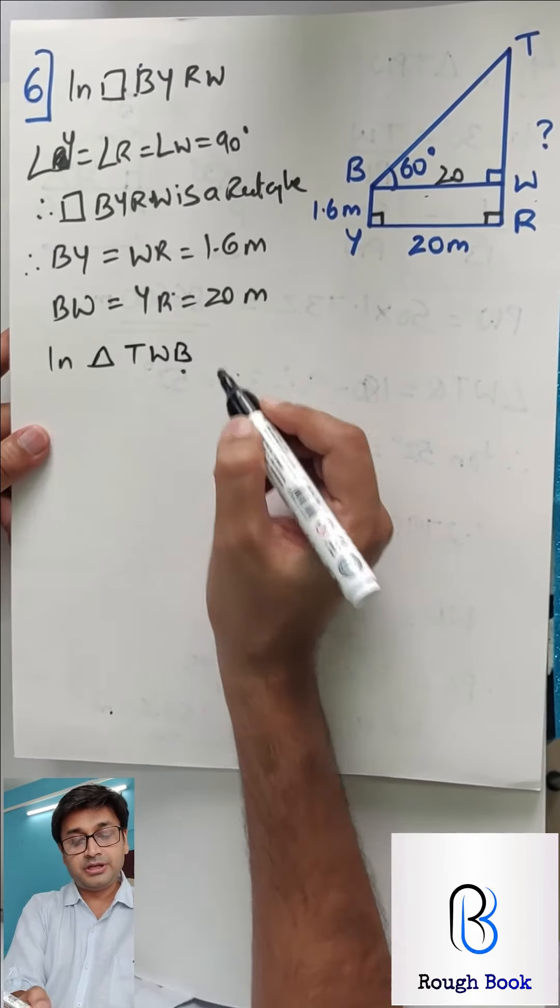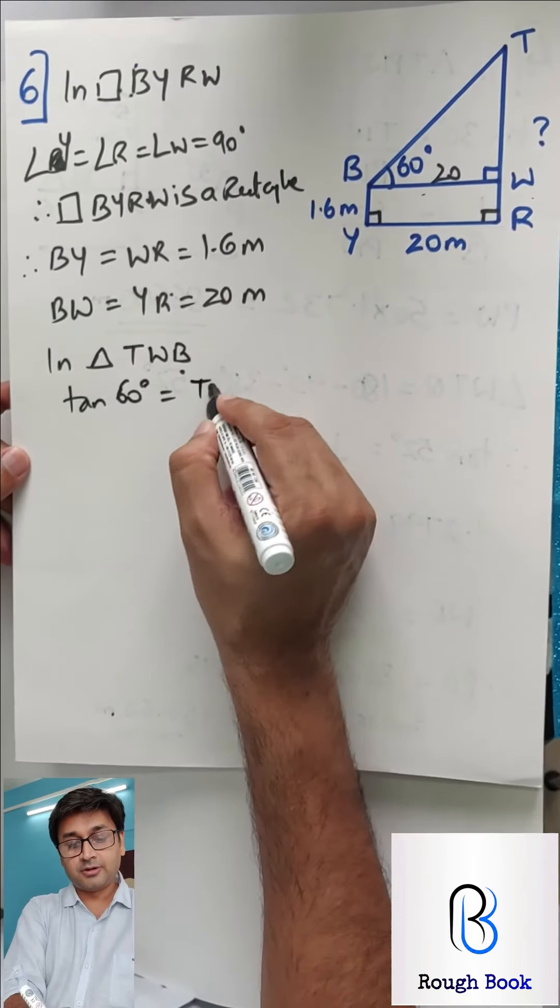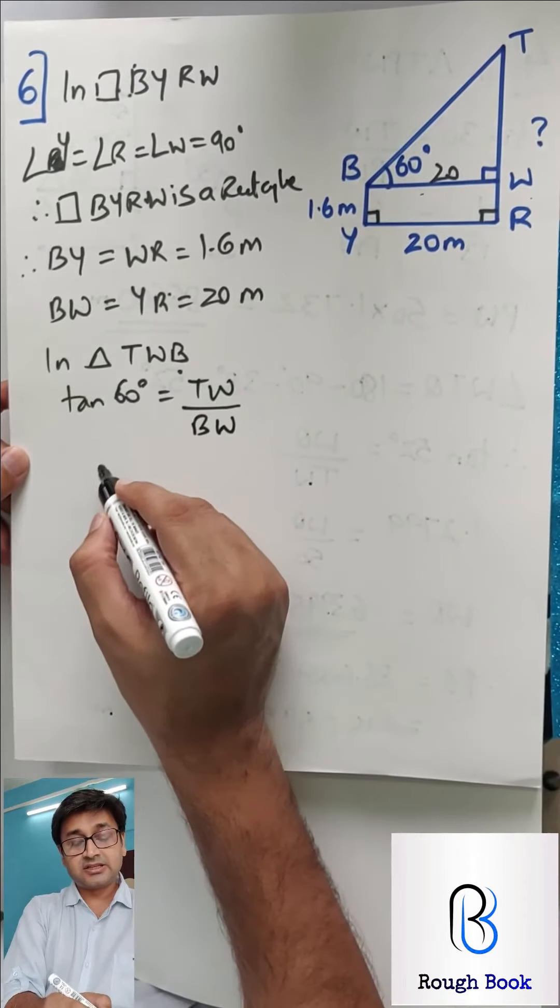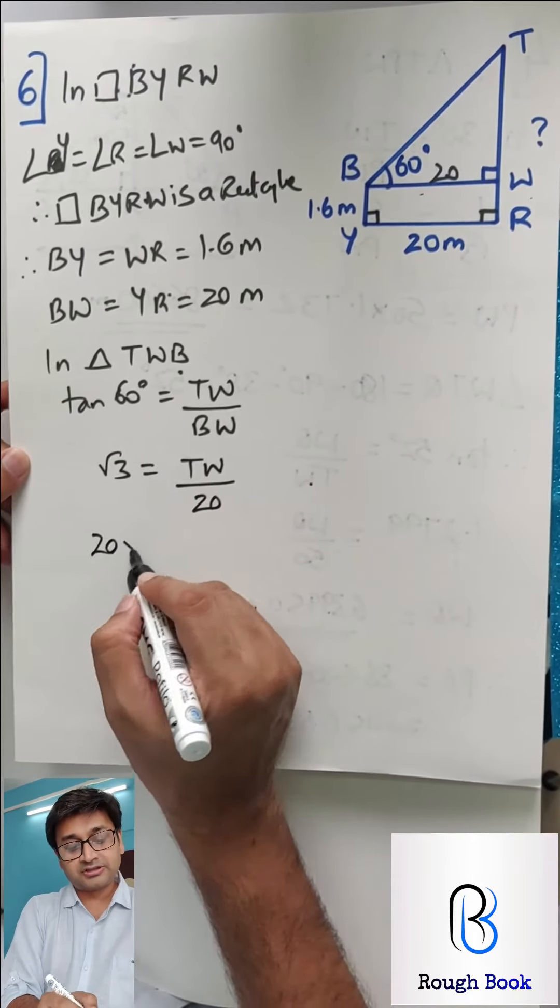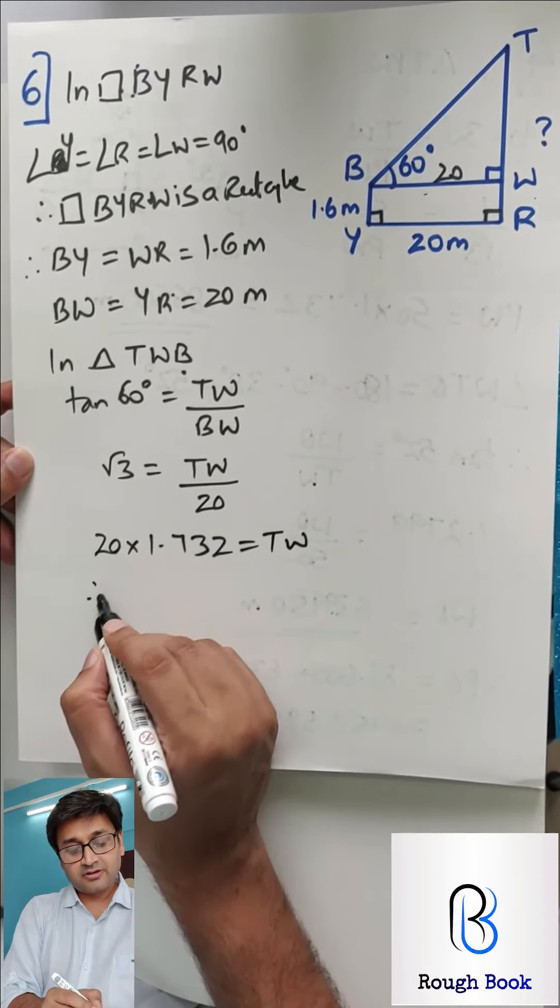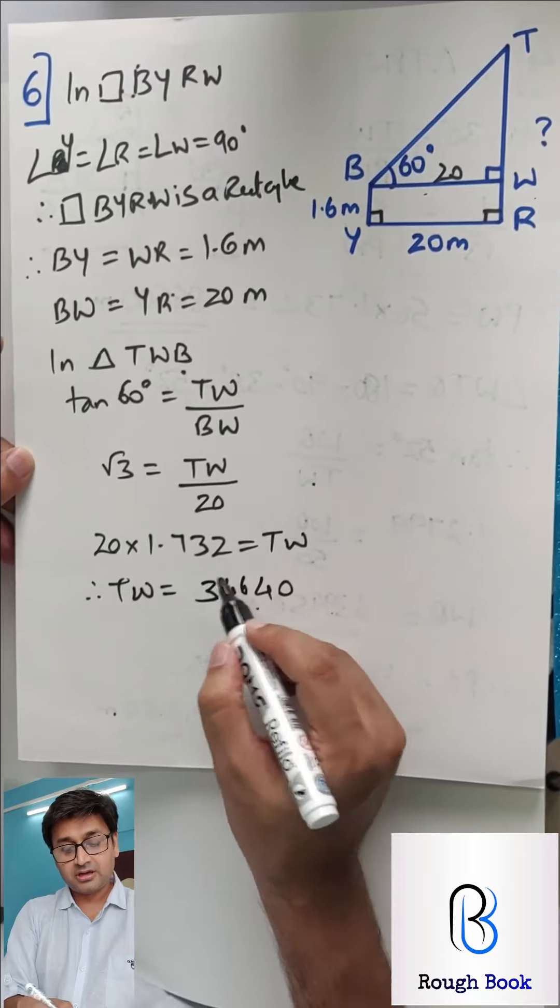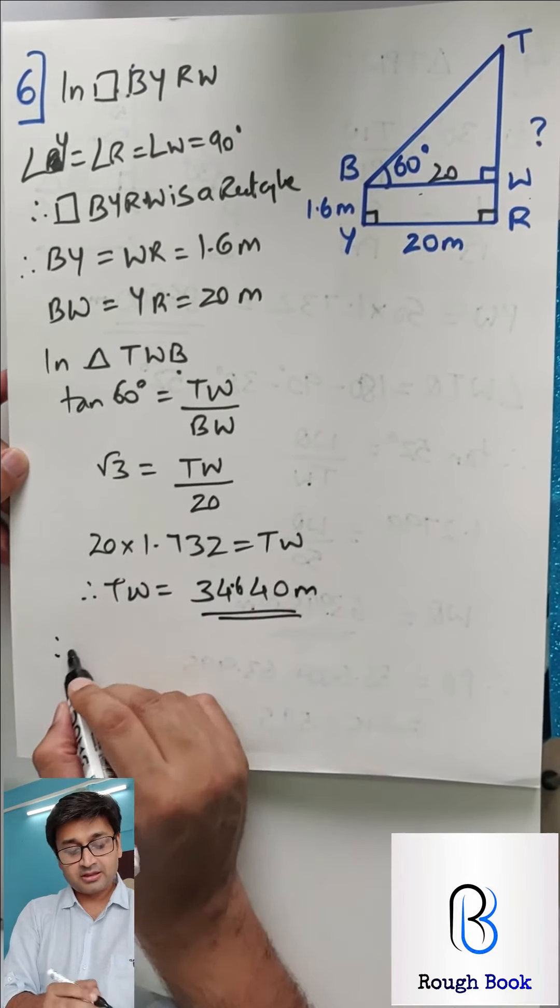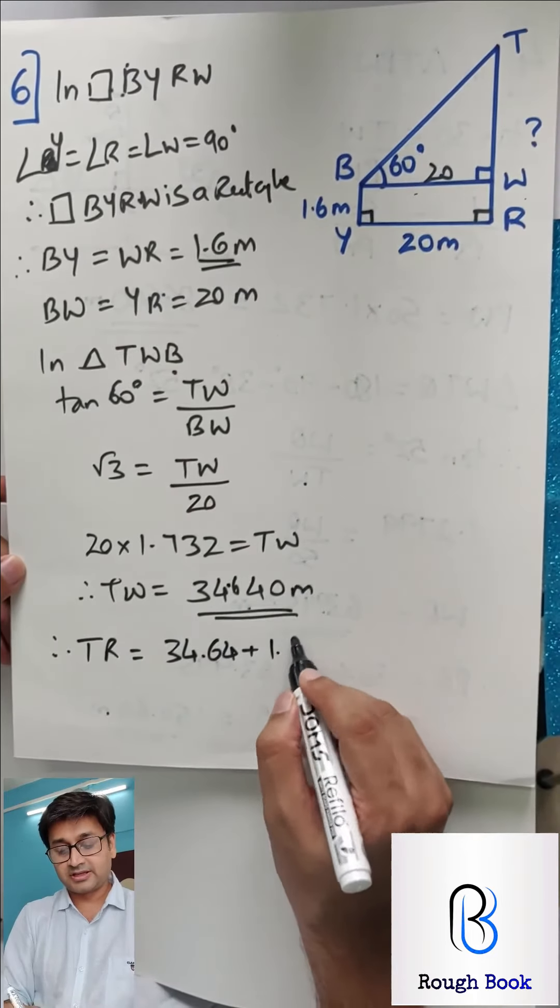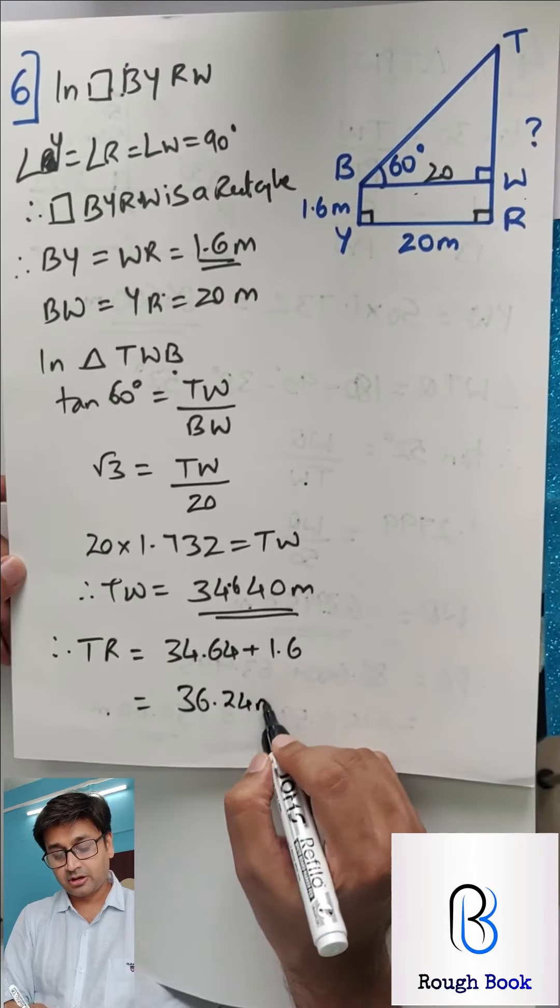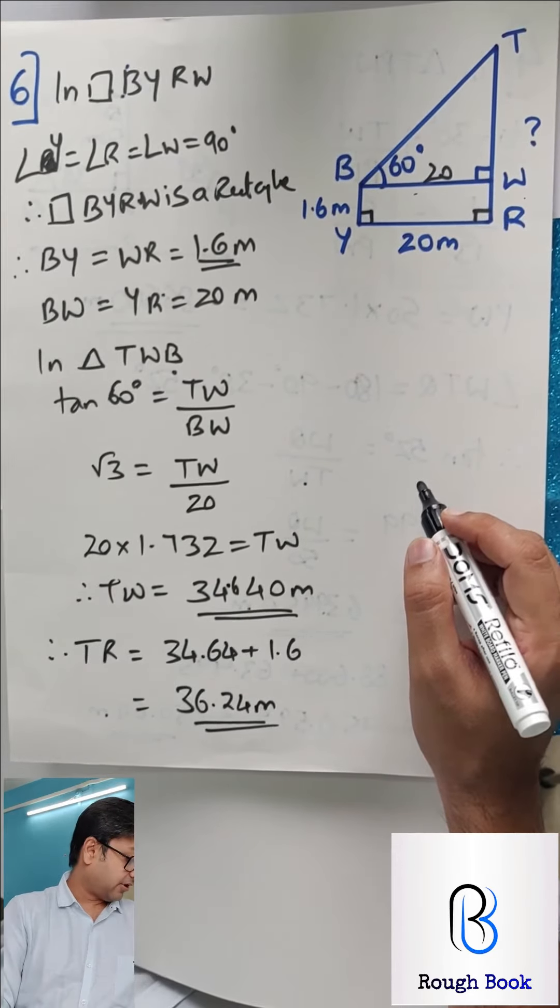Therefore, BY is equal to WR equals to 1.6 meters and BW is equal to YR equals to 20 meters. So we got this 20, now apply tan. In triangle TWB, I will say tan 60 is equal to TW upon BW. So tan 60, root 3, TW we don't know and BW is 20. So TW is 20 into 1.732. Therefore, TW is 34.64 meters. And therefore, finally, tower, that is TR, 34.64 plus this WR, which is 1.6. So my final answer should be 36.24 meters as the height of the tower.